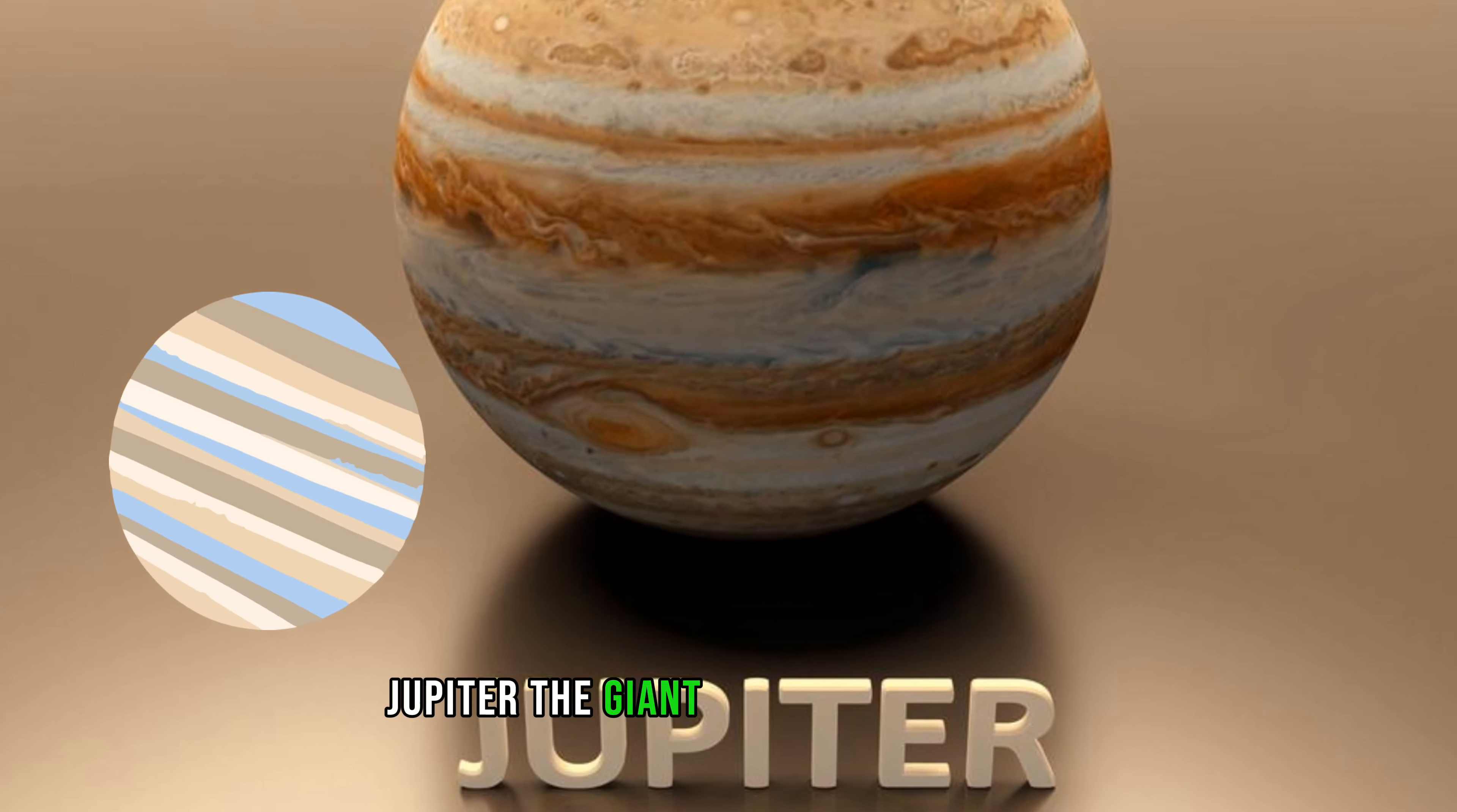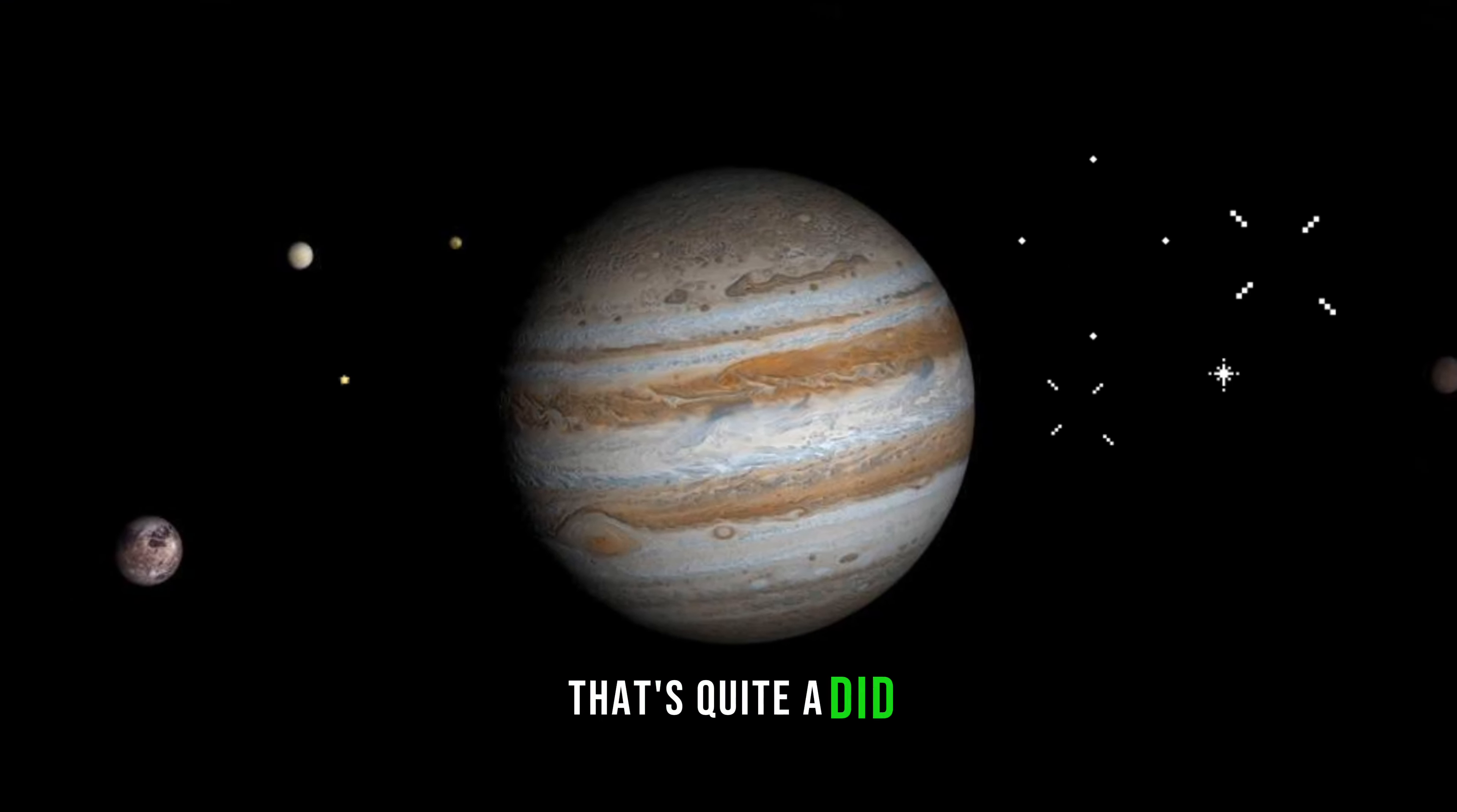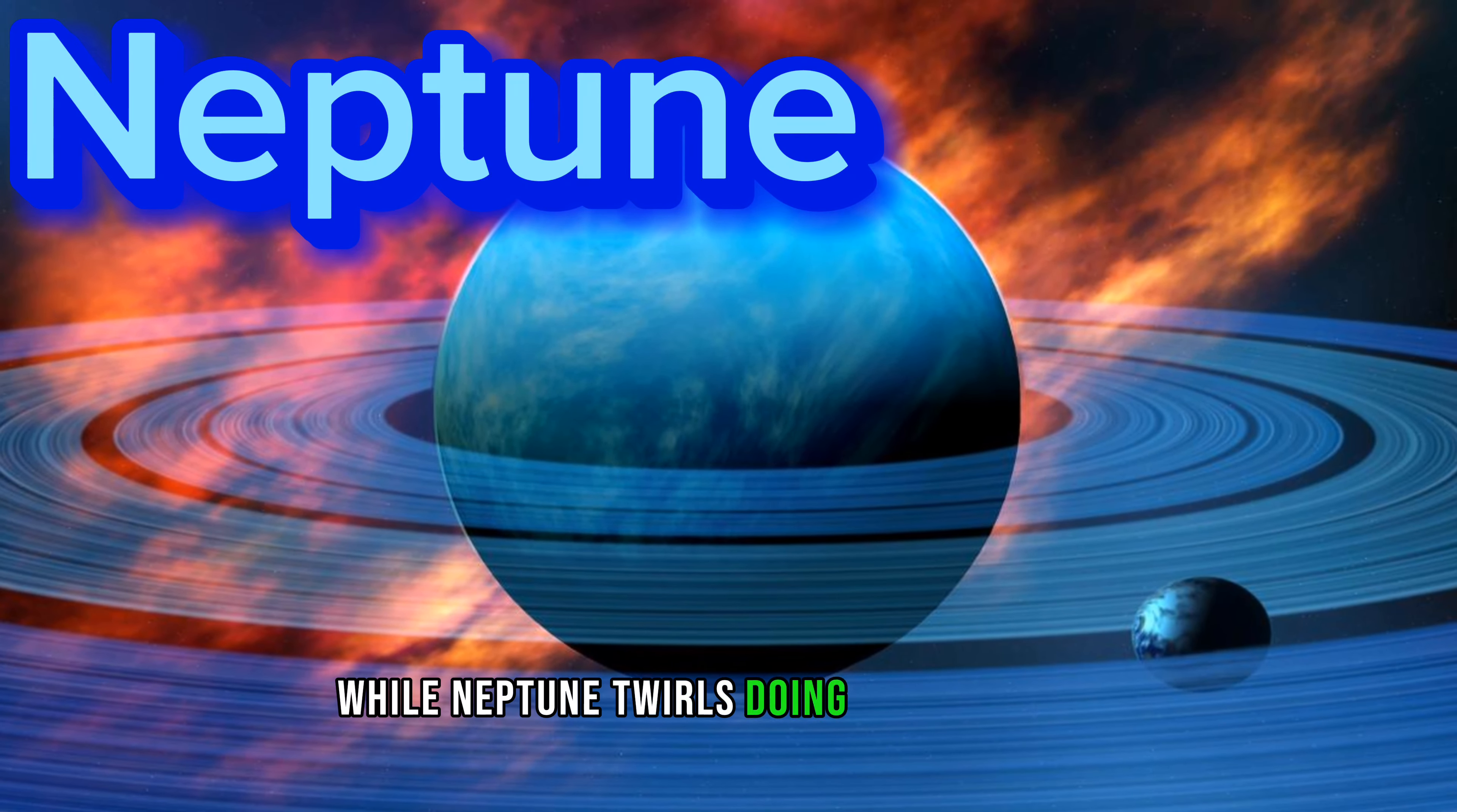Jupiter, the giant with a massive spin, with a stormy spot that's quite a din. Saturn's got rings like a cosmic hula hoop, while Neptune twirls doing a loop-de-loop.